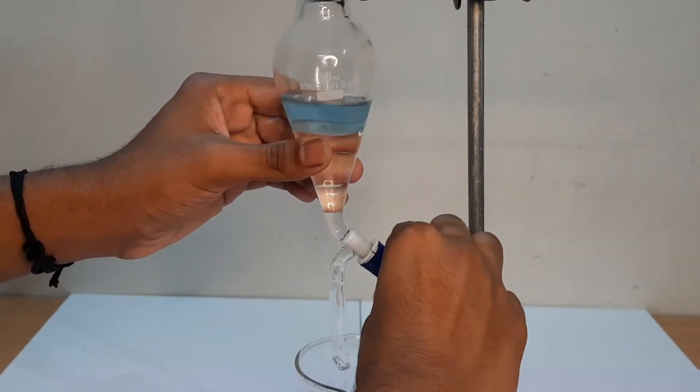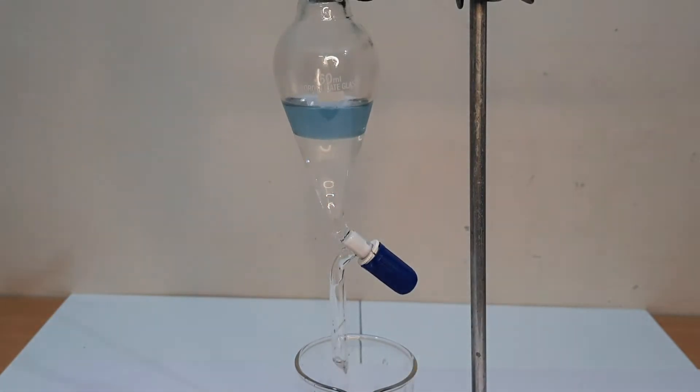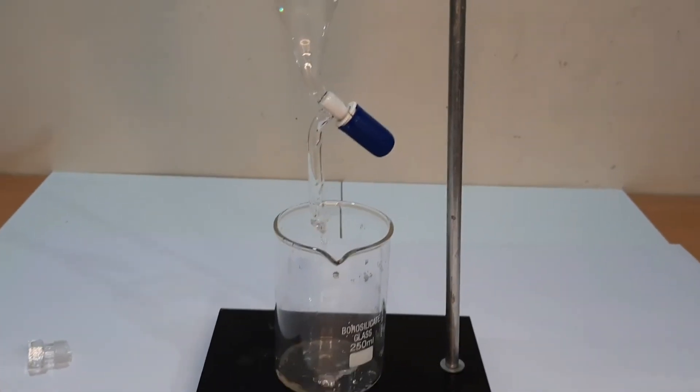On opening the stopcock of the separating funnel, the lower layer of water comes out first and is collected in the beaker.